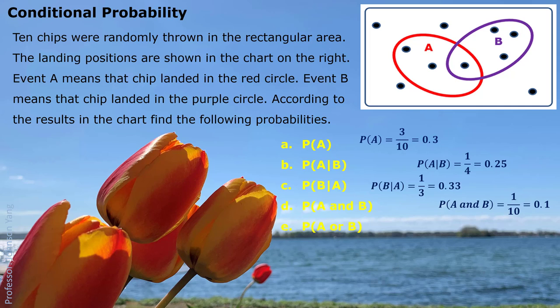Part E: P(A or B). That means the chance the chip landed in the red circle or the purple circle — this is an inclusive situation. We count how many chips are in that situation: 1, 2, 3, 4, 5, 6 — six chips out of 10. So the answer is 60% or 0.6.